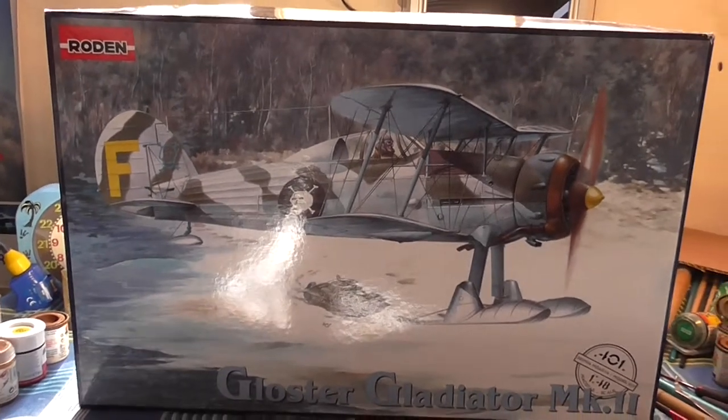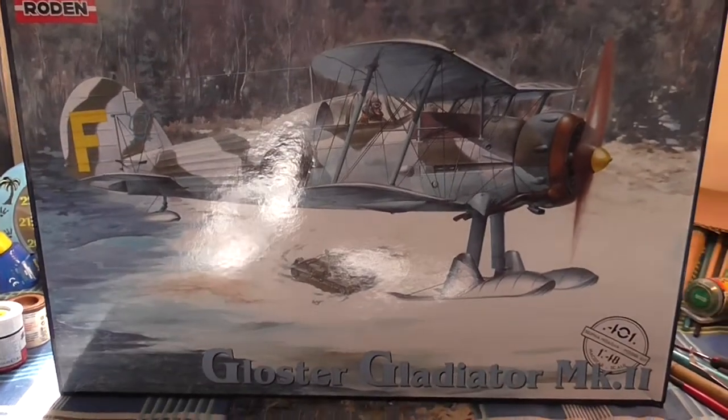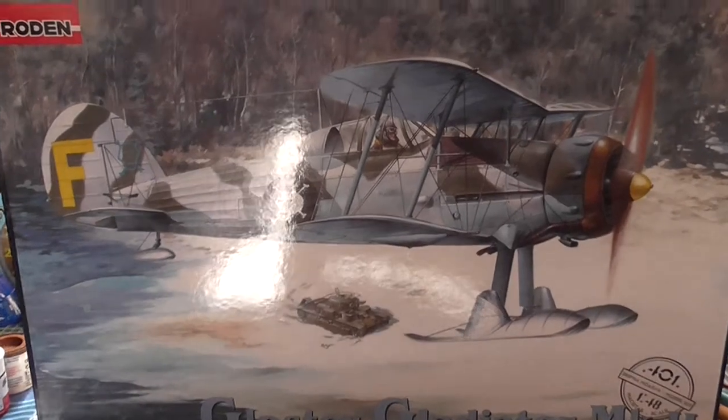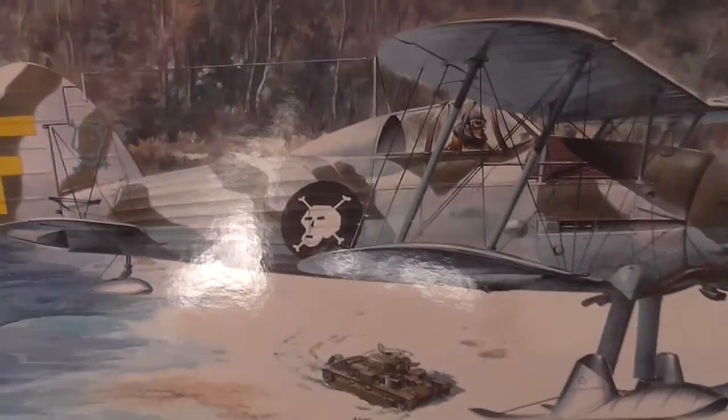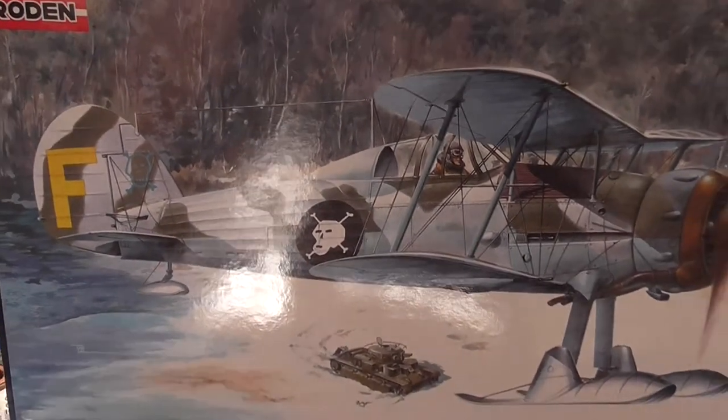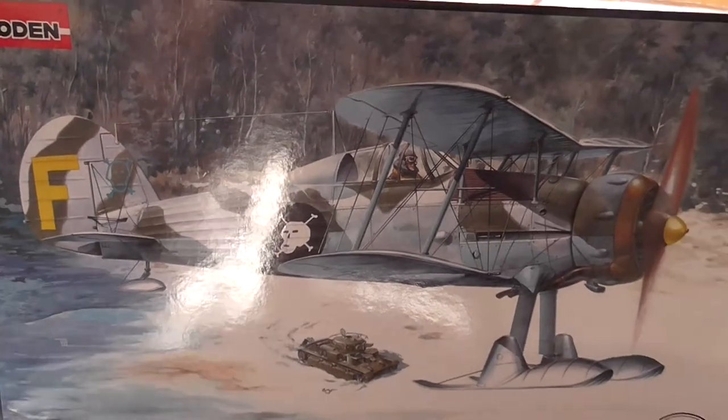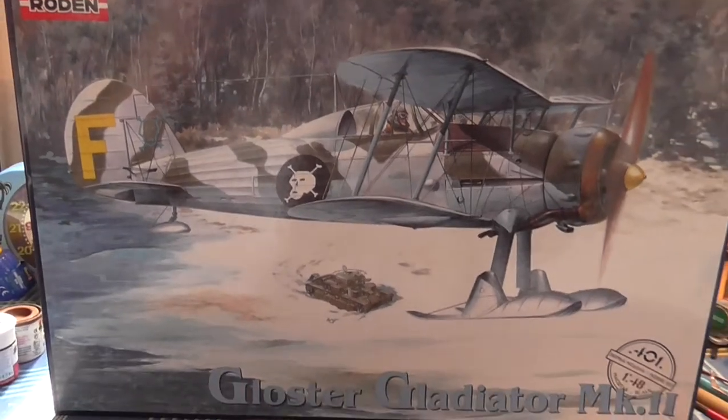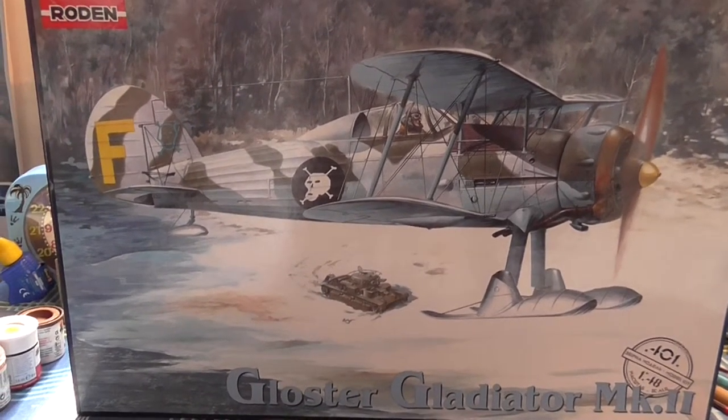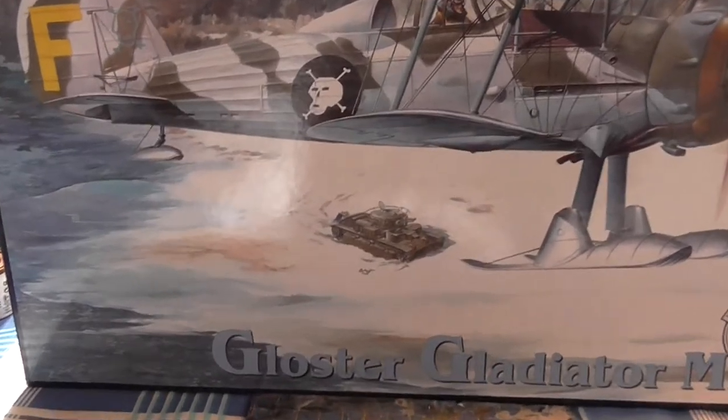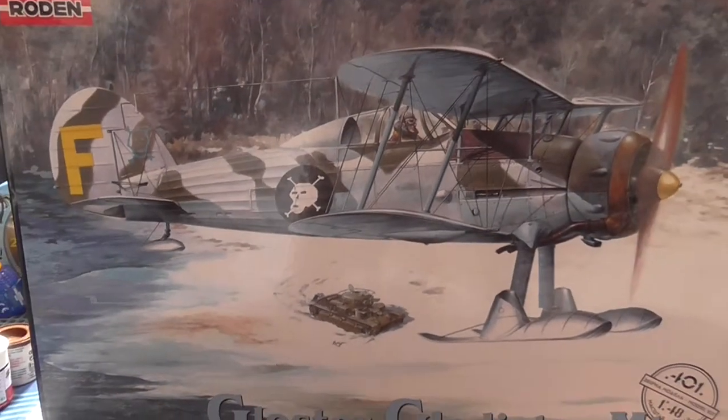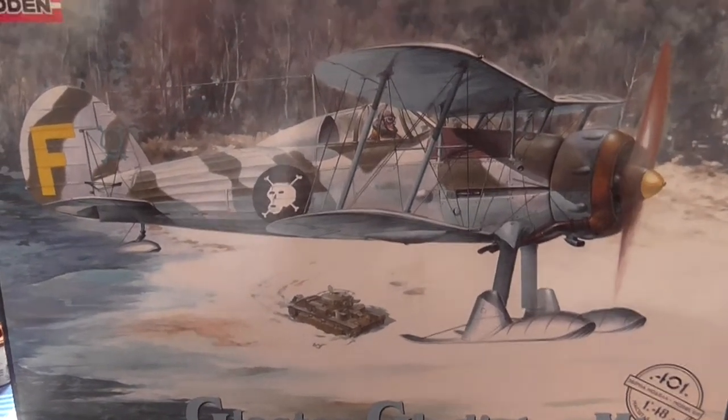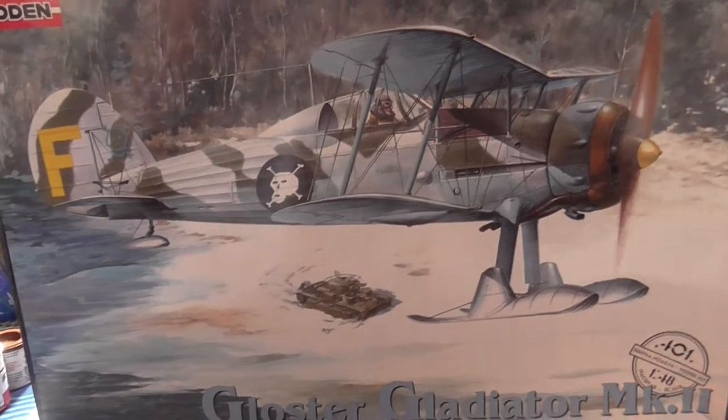Hello guys and welcome to my review on this, the Rodin 1/48 Gloucester Gladiator Mk2. As you can see on the box out here, it's got one of the decal options from the kit and it's quite simple. The Gladiator flying over a tank in a snowy background, so presumably Finland or something like that. Simple and effective, the way I like it.